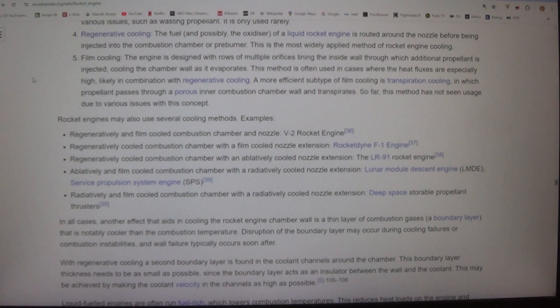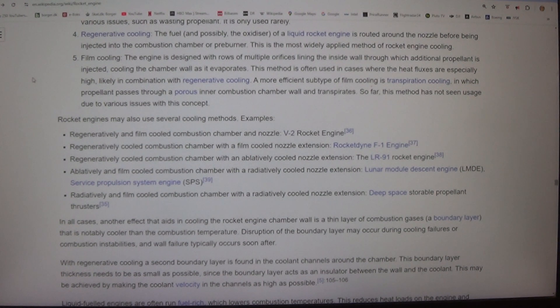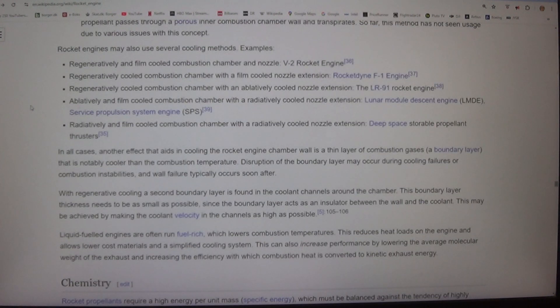Five, film cooling - the engine is designed with rows of multiple orifices lining the inside wall through which additional propellant is injected, cooling the chamber wall as it evaporates. This method is often used in cases where the heat fluxes are especially high, likely in combination with regenerative cooling. A more efficient subtype of film cooling is transpiration cooling, in which propellant passes through a porous inner combustion chamber wall and transpirates. So far, this method has not seen usage due to various issues with this concept.